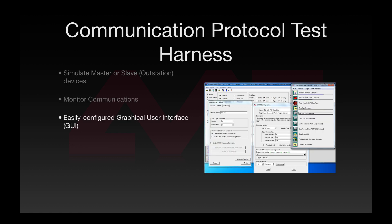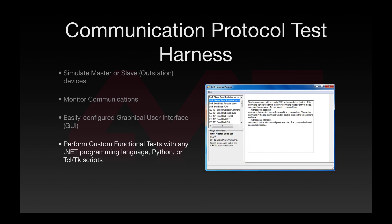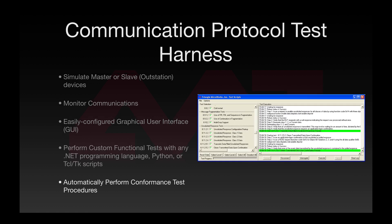The test harness is easily configured using a graphical user interface, or GUI. In addition to the GUI, complex custom functional tests can be developed using any .NET programming language, Python, or TclTK scripts. An optional module allows you to automatically perform conformance test procedures.